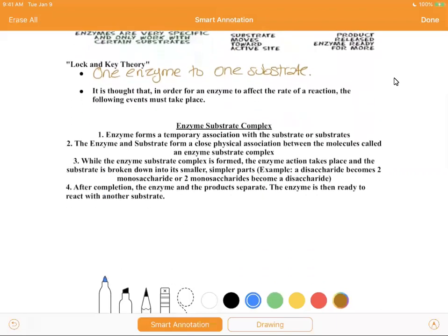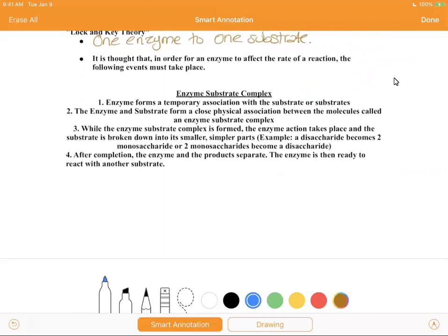It is thought that in order for an enzyme to affect the rate of a reaction, the following events must take place. So the enzyme substrate complex: Enzyme forms a temporary association with the substrate or substrates. The enzyme and substrate form a close physical association between the molecules called an enzyme substrate complex. While the enzyme substrate complex is formed, the enzyme action takes place and the substrate is broken down into its smaller, simpler parts. Example: a disaccharide becomes two monosaccharides or two monosaccharides becomes a disaccharide. So we can either break down, digest, or we can synthesize, put together.